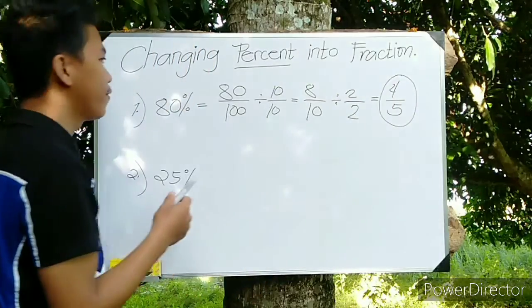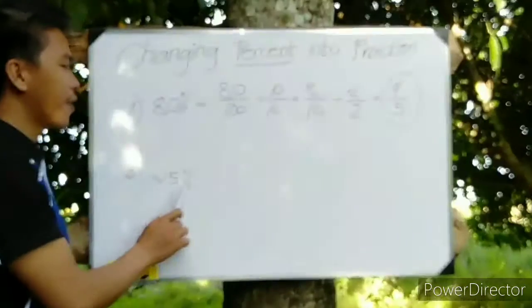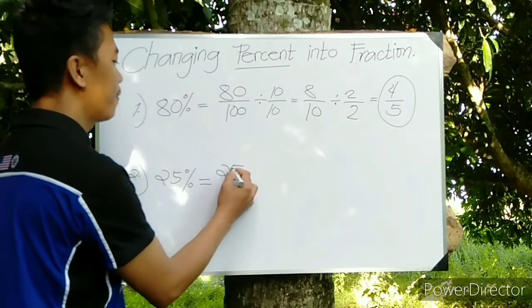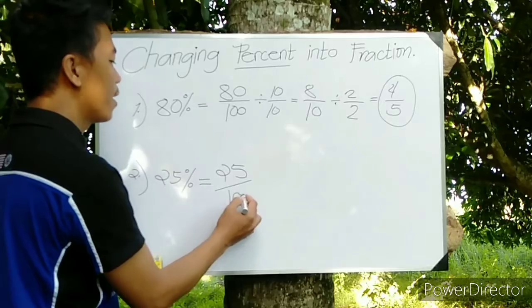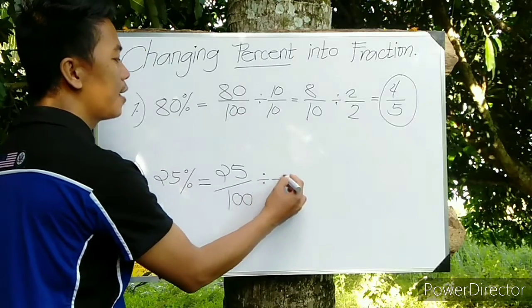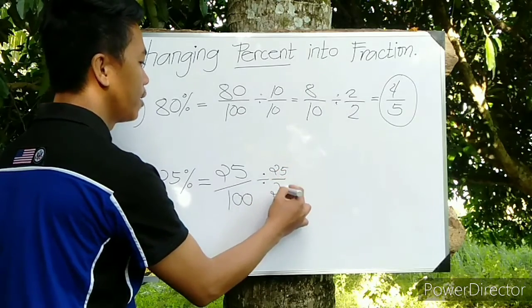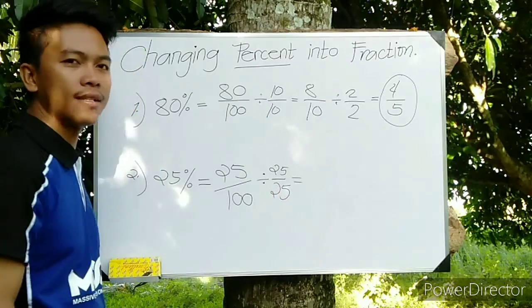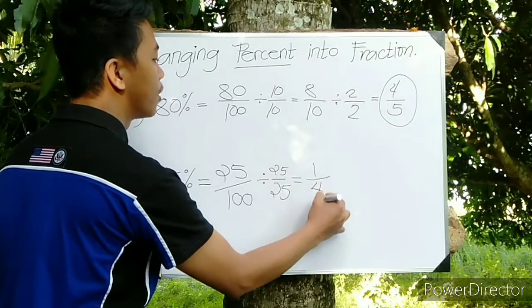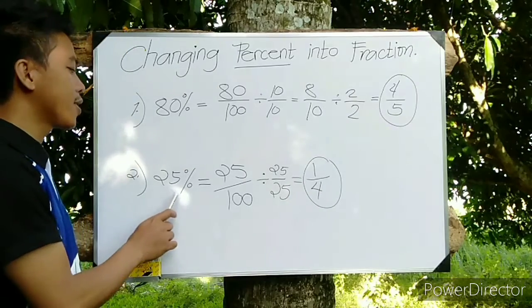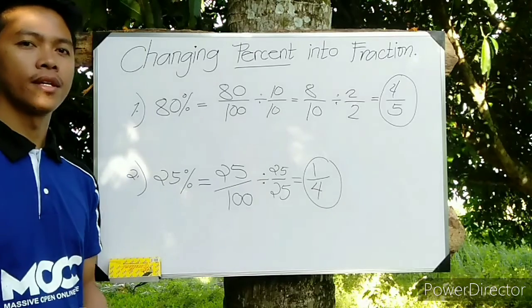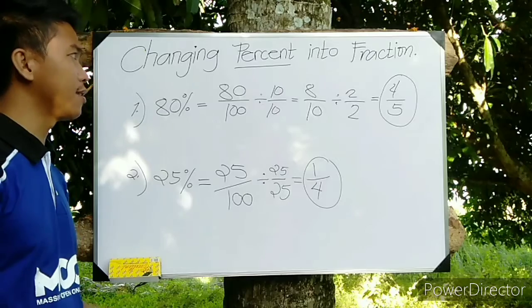Therefore, 80% is 4 over 5. For 25%, again 25% means 25 over 100. Just reduce this into lowest term by dividing 25 over 25, so the answer here is 1 over 4. So 25% is 1 fourth in fraction form.